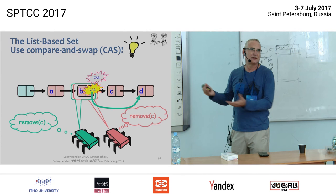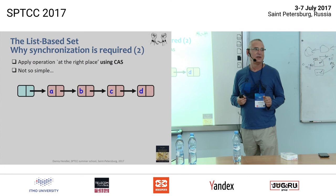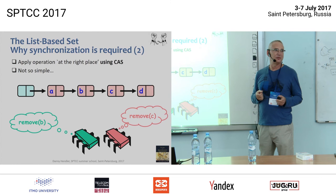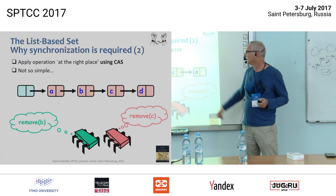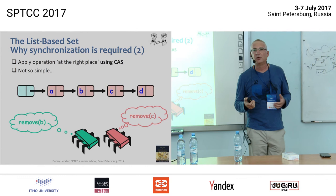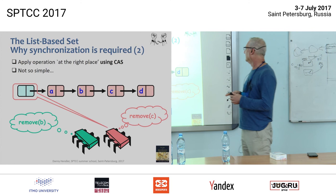We cannot just use plain writes — but it turns out that using compare-and-swap alone is still not sufficient. Consider a scenario where two threads try to remove different items: the green thread wants to remove node B, and the red thread wants to remove node C. Let's see a scenario showing that just using CAS will not necessarily allow us to do this correctly.